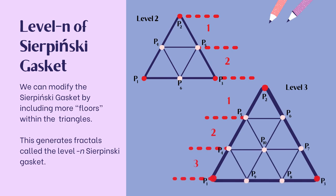The Level-n of the Sierpinski Gasket. We can modify the SG by including more floors within the triangles. This generates fractals called the Level-n Sierpinski Gasket. As we see in the examples, Level 2 has 2 floors and 3 internal triangles have been generated.